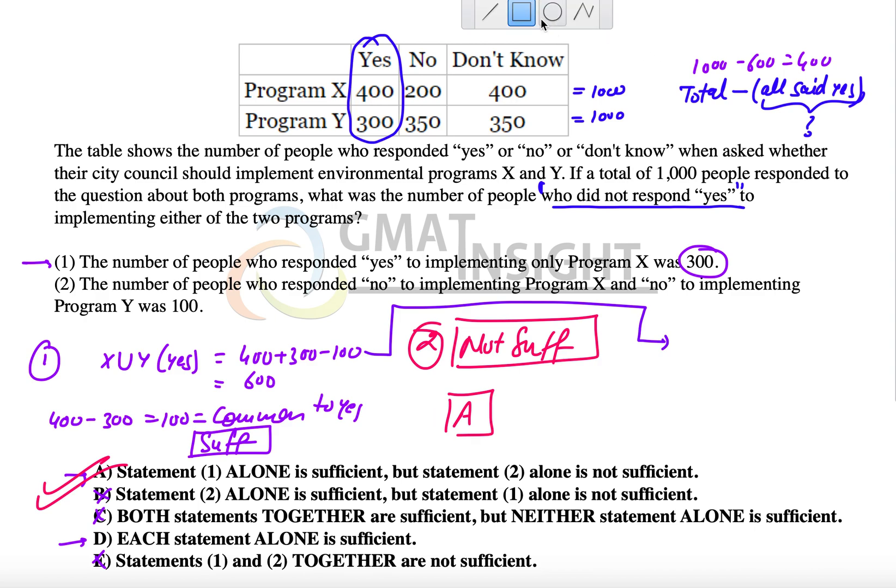To explain statement one, I could also represent it using a Venn diagram if that makes it easier for viewers. We have the first circle which said yes to X, so X yes, Y yes. For X yes the total is 400, and this particular part is 300. That's what the first statement gives us - the people who said yes to only program X.